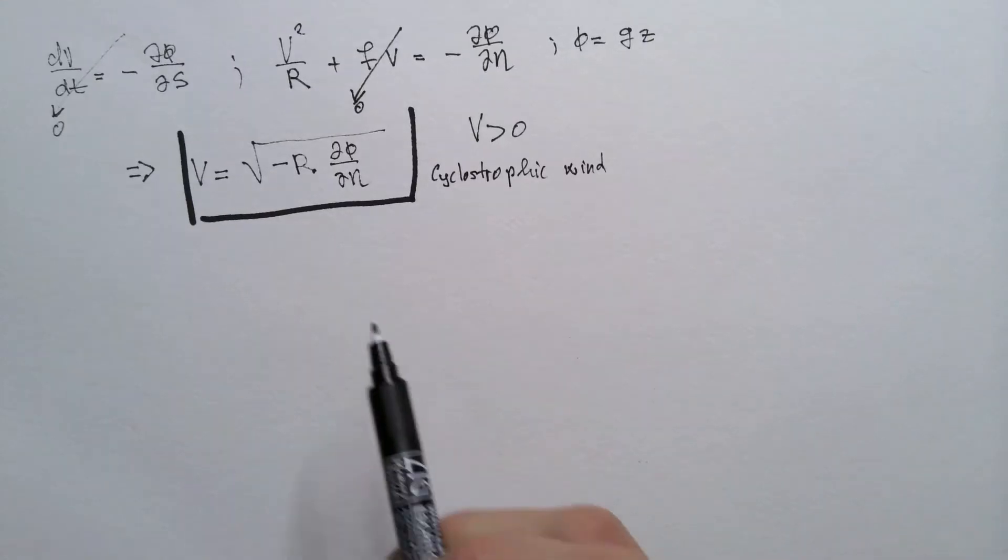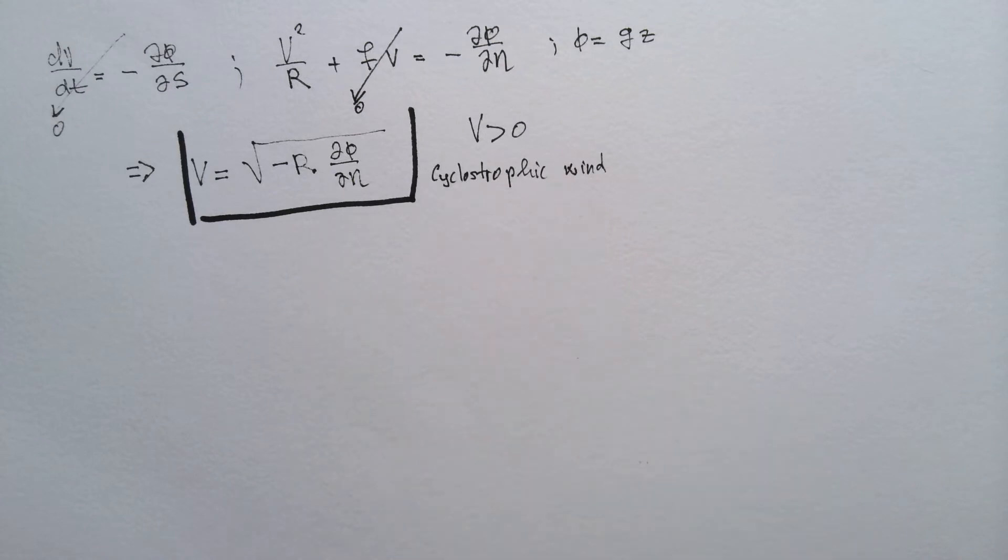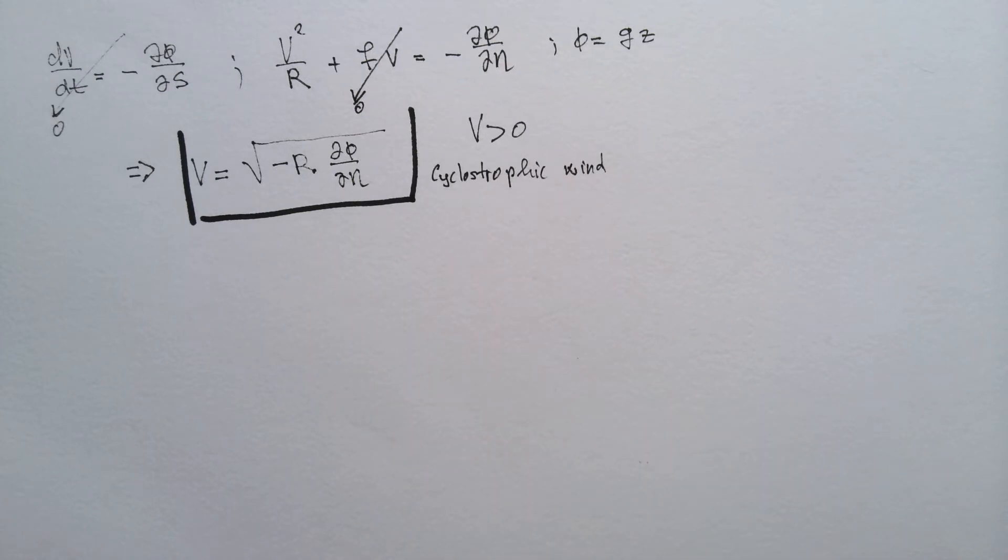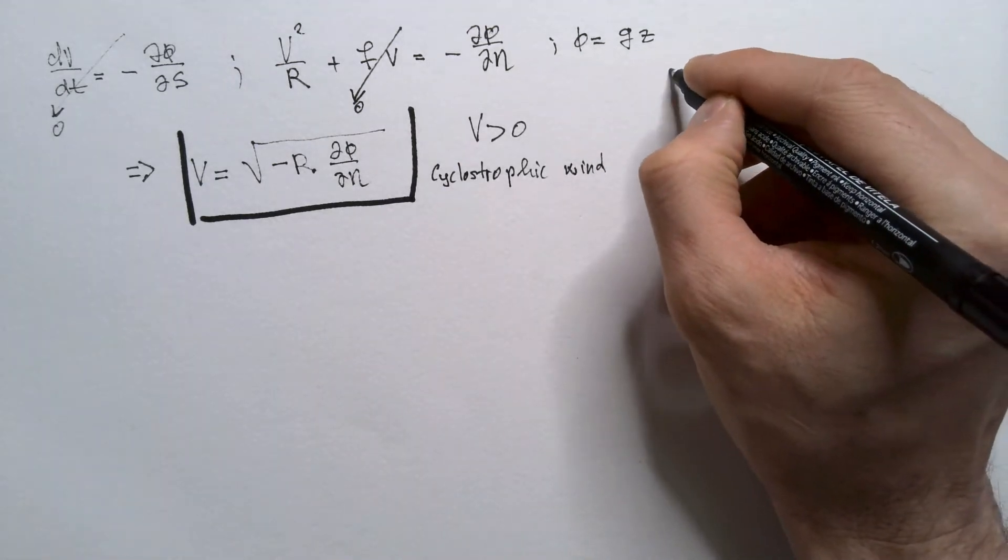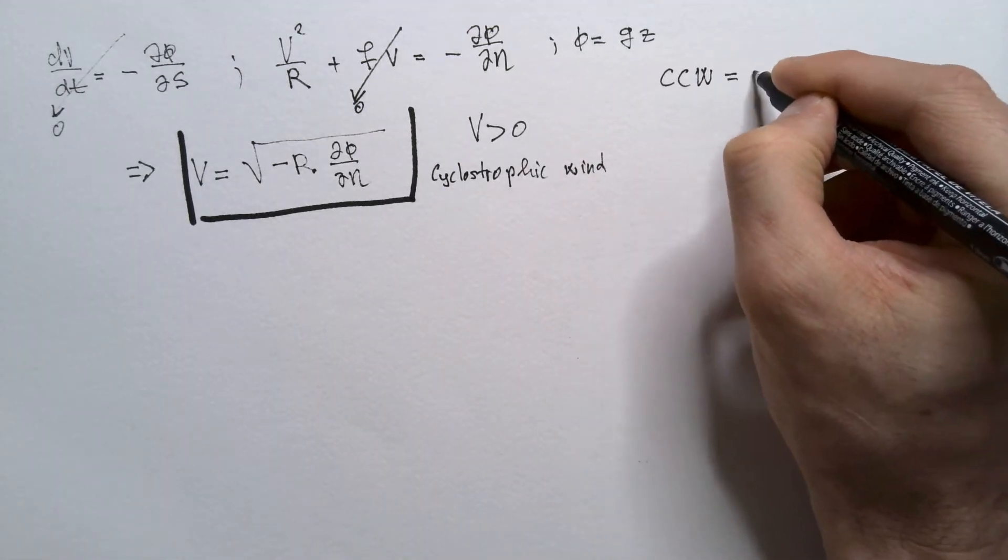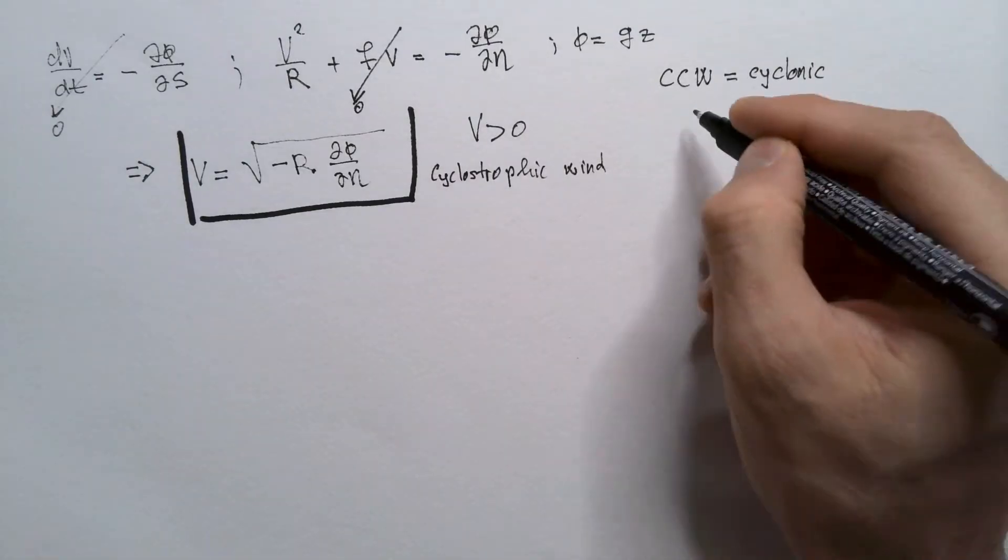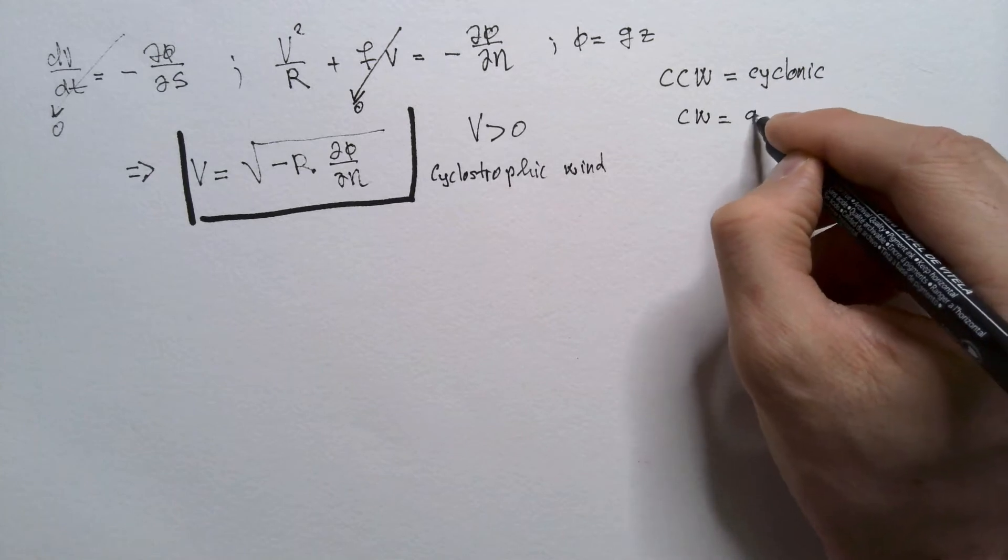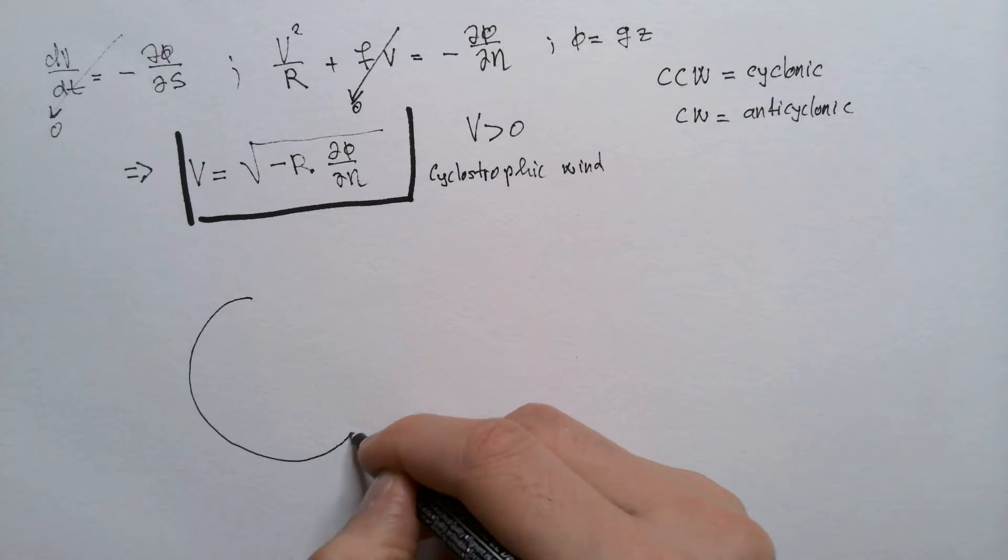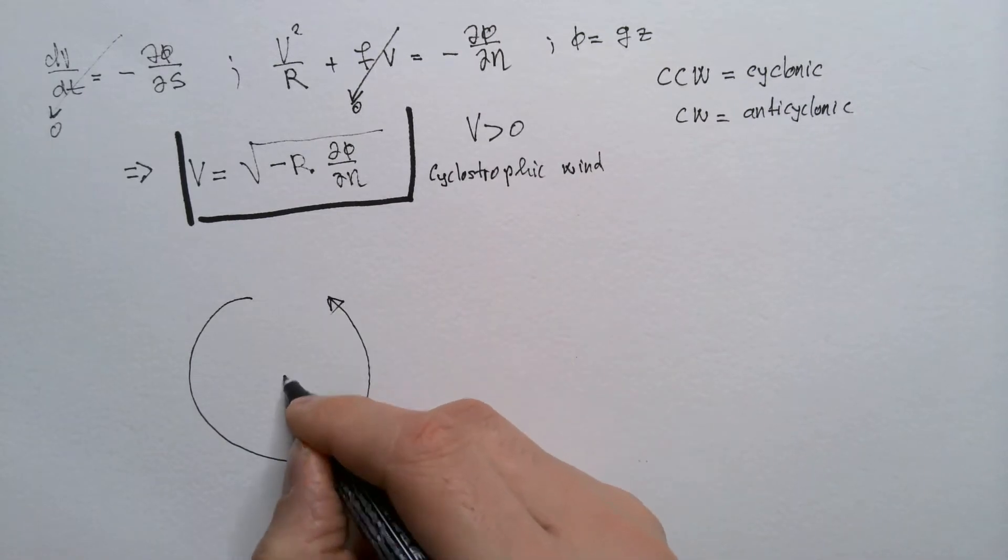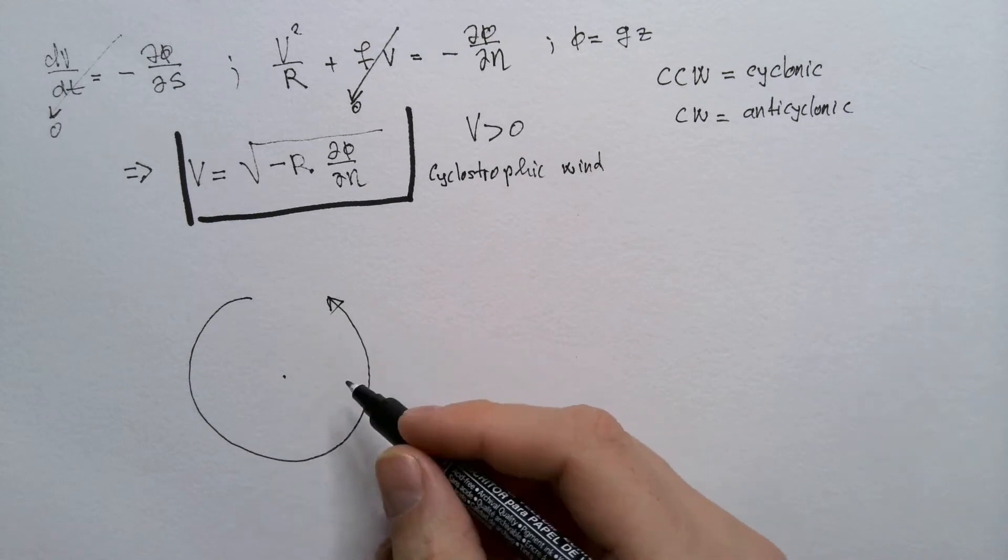Let us now see how this formula tells us that cyclostrophic winds can turn in either clockwise or counterclockwise direction. Now, in atmospheric sciences, in northern hemisphere, we say that counterclockwise rotation is cyclonic rotation. And clockwise is something that we call anticyclonic. So let's look into this motion. Here is the center of this curvature. Clearly, this is counterclockwise, which means it is cyclonic.